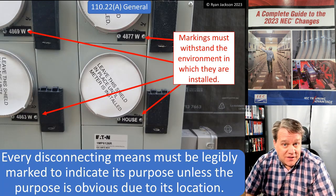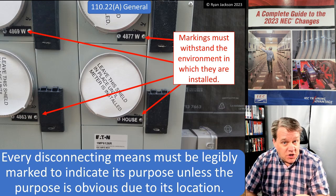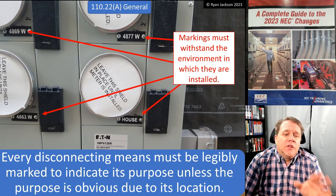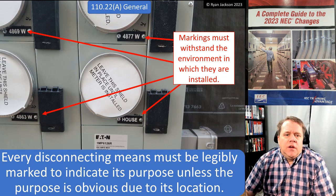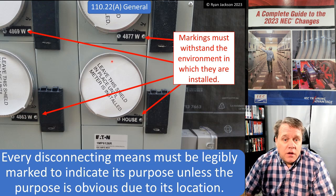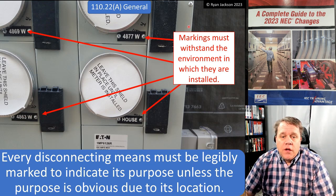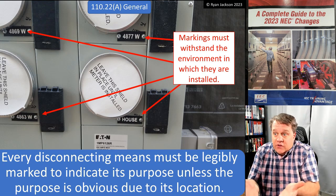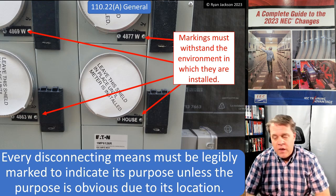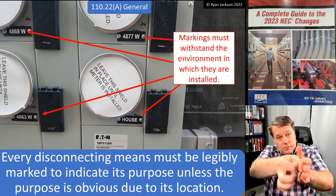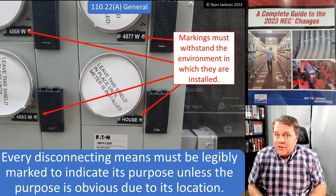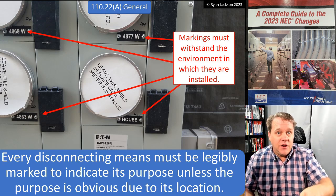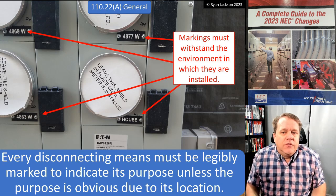110.22(a) did not change. It says every disconnecting means must be legibly marked to indicate its purpose, unless the purpose is obvious due to its location. Here I have a multi-family dwelling with three different units and a house meter, so we have to tell people what each disconnecting means is doing - unless it's obvious. For example, if you walk up to a disconnect outside and you can see liquid-tight conduit terminating to an air conditioner, it's pretty obvious that's the AC disconnect, so you don't have to mark it.